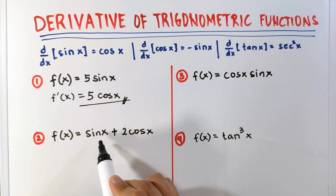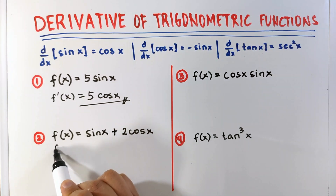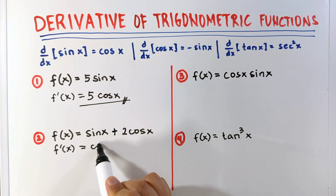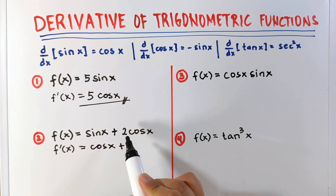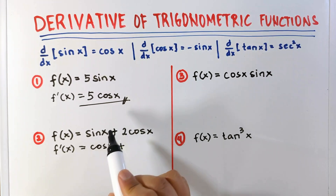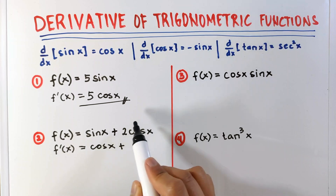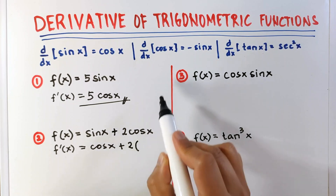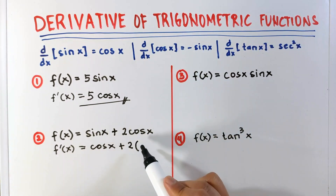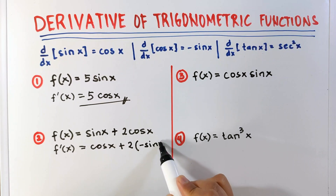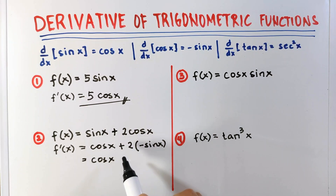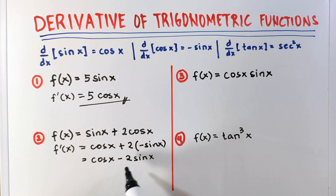Number 2: f of x equals sin x plus 2 cosine x. The derivative is equal to: the derivative of sin x is cosine x, plus — the constant multiple rule is also applicable here — so we simply copy the constant and multiply it by the derivative of cosine x. The derivative of cosine x is negative sin x, so we have negative sin x. Simplifying: cosine x, and negative 1 times 2 is negative 2, so that's minus 2 sin x. This is the final answer.